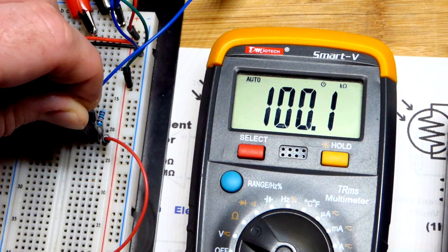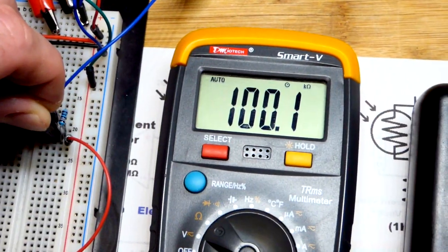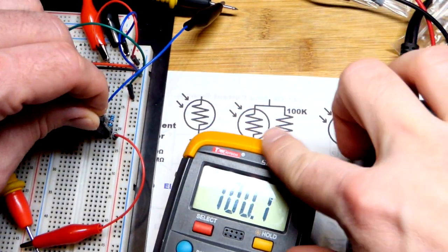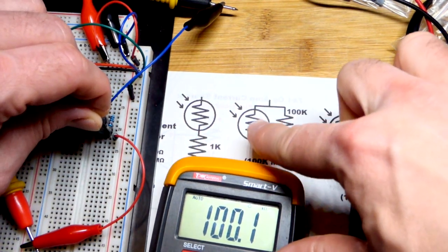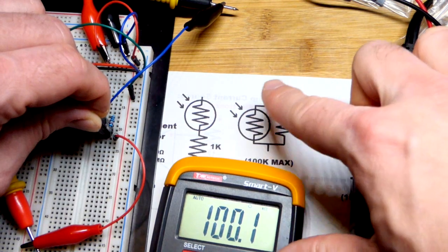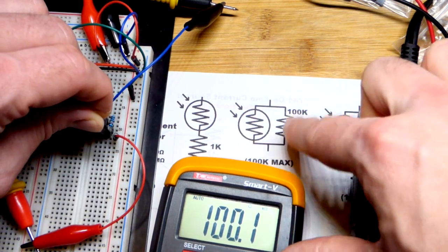There you can see it's a hundred thousand ohms of resistance because that's what we used was a 100 kilo ohm, 100,000 ohm resistor right there that has so much resistance it's almost like it's air or something. There's just one path for the most part.